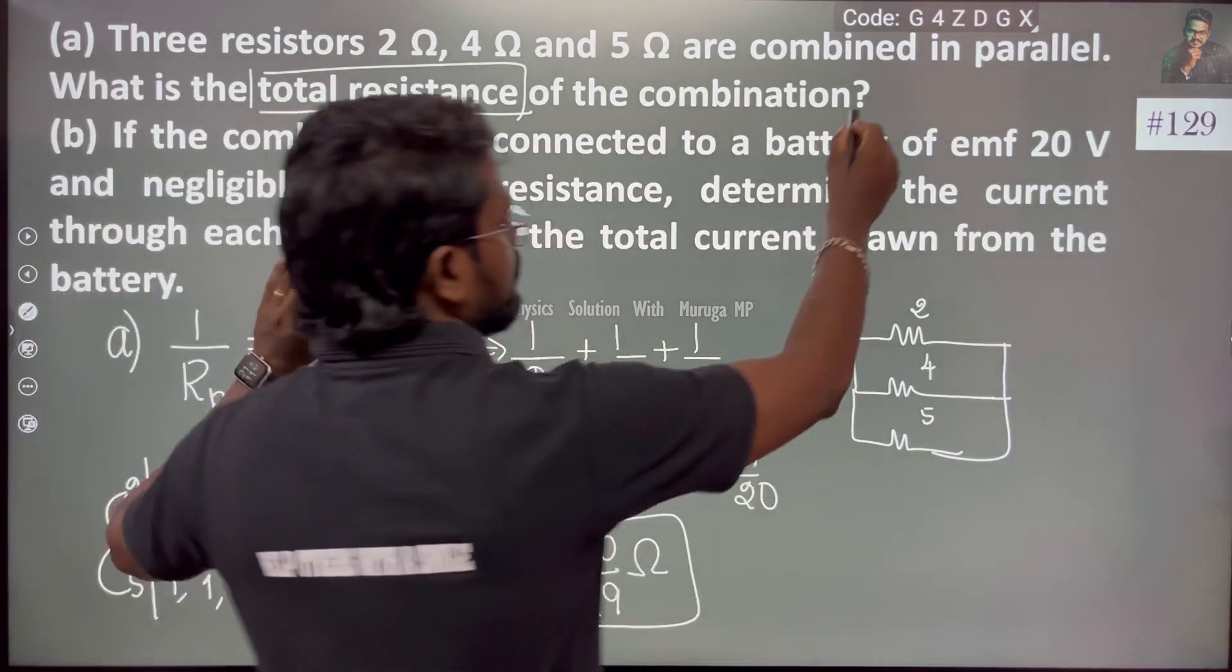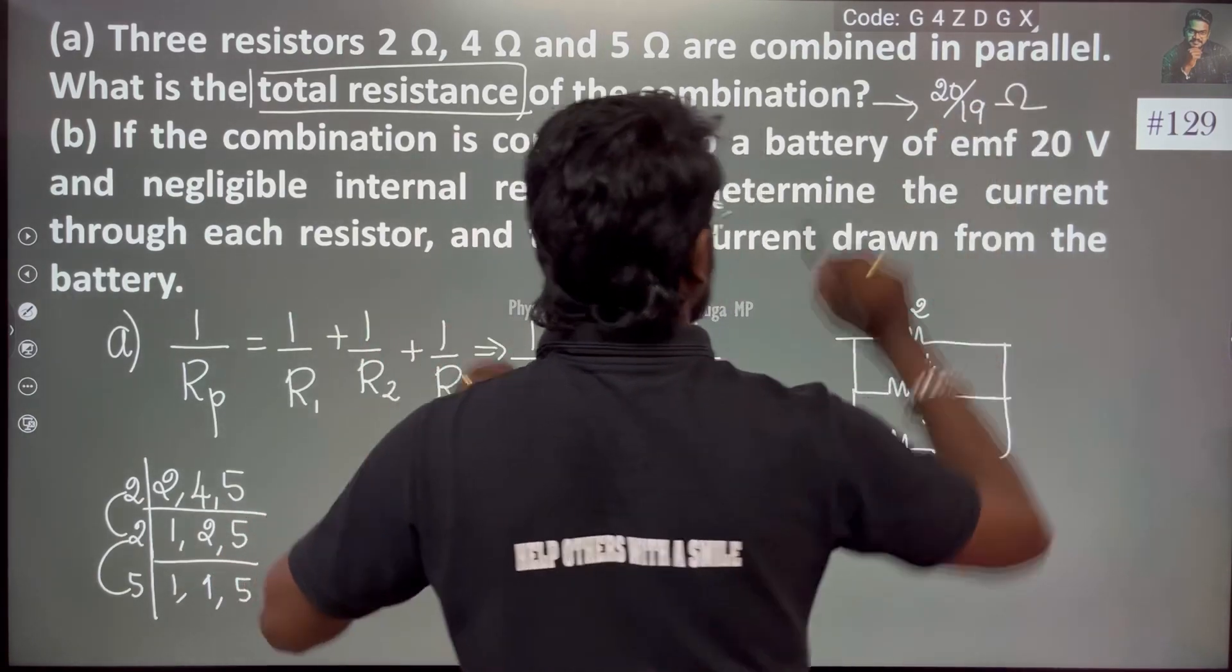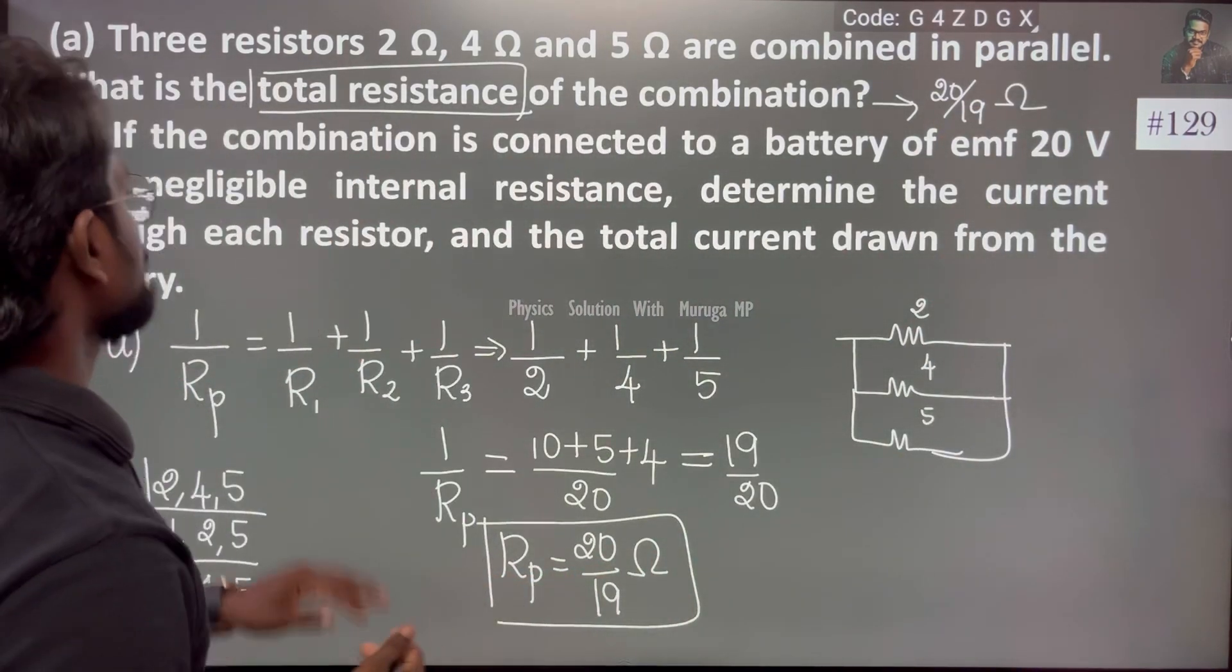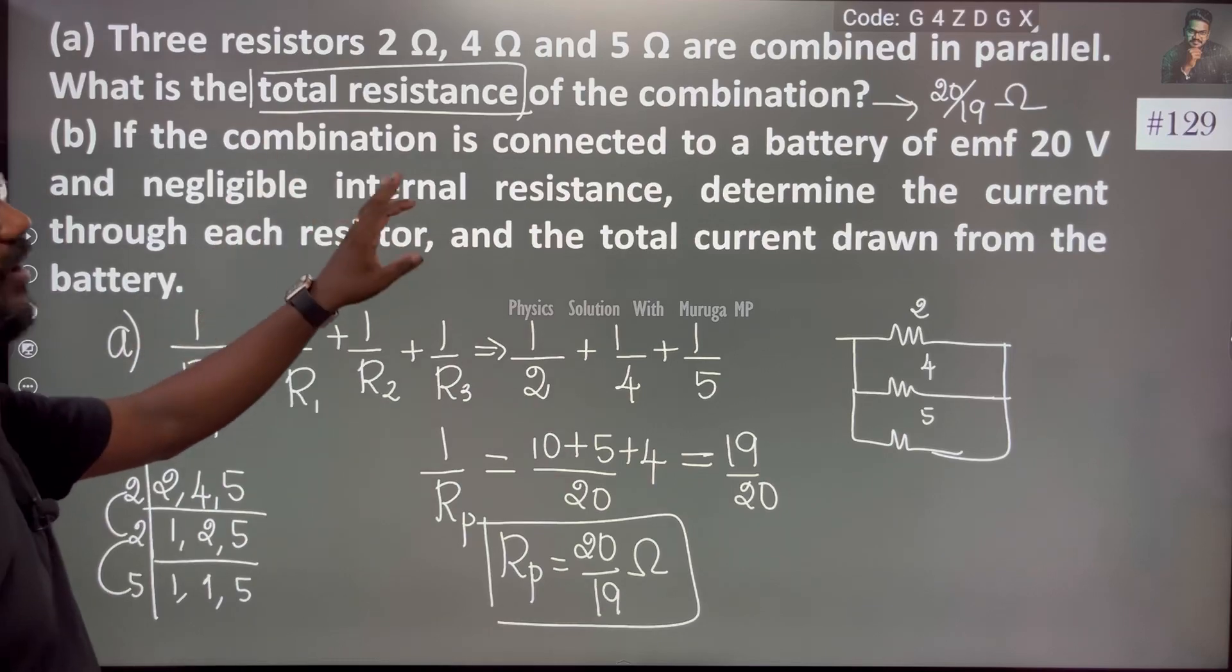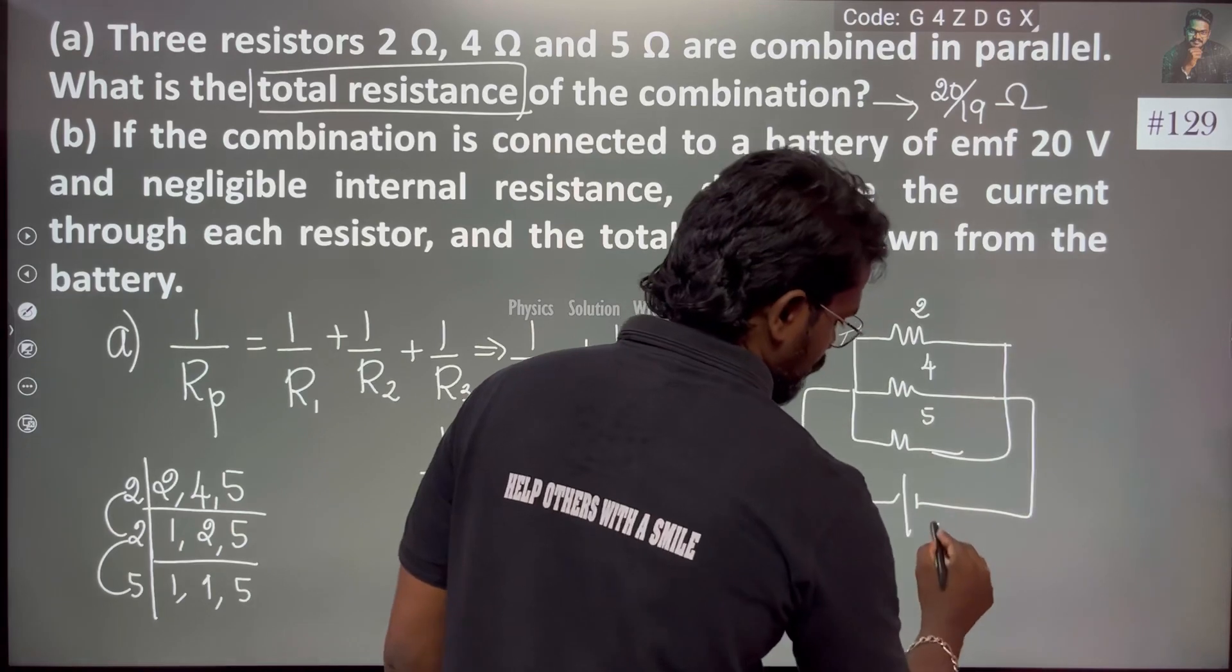So Rp is 20/19 ohm, around 1 point... So Rp, this is the answer: 20/19 ohm. Now, the combination is connected with 20 volts.